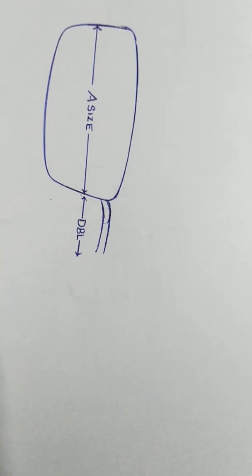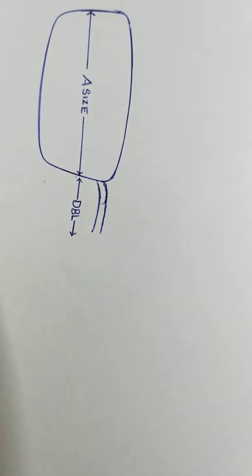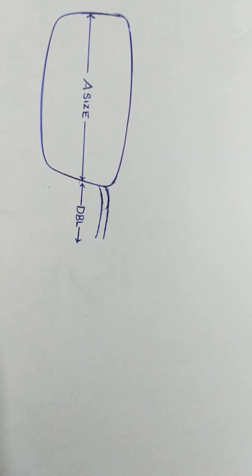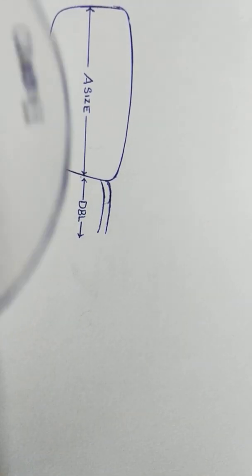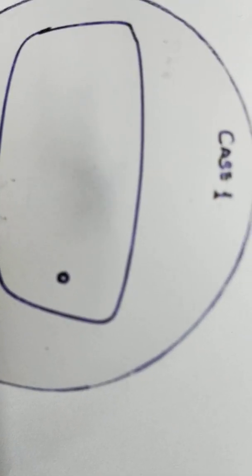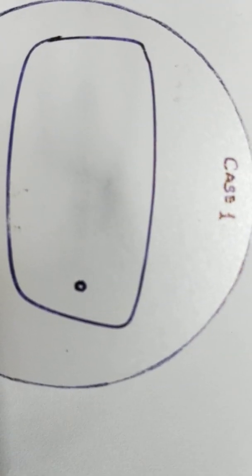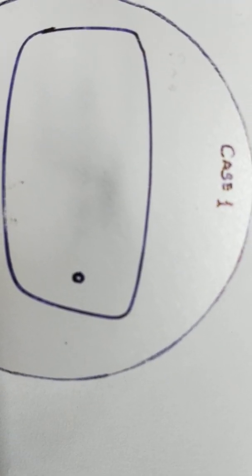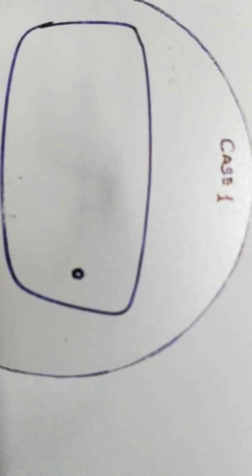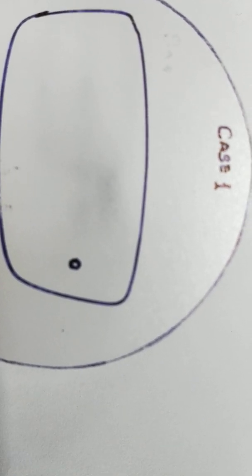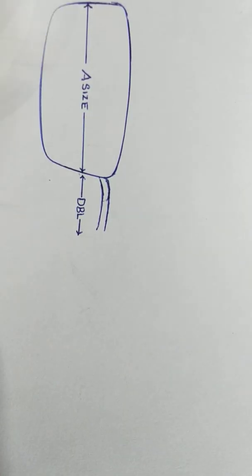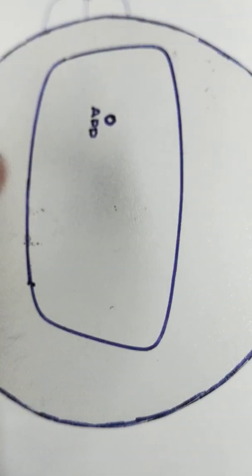Now whenever we get a progressive lens, a customer who comes with a progressive lens, we have two or maybe three cases. Case one is wherein the lens has scratch, and we are able to see only the nasal part or the nasal micro etching on the progressive lens.